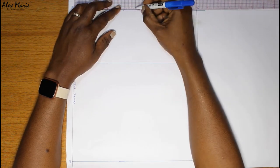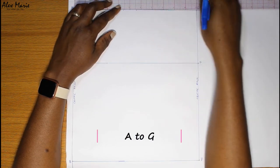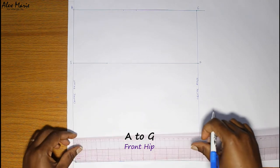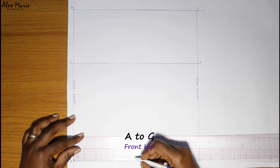From point A you're going to go to point G. This is our front hip measurement. I'm doing the same at the bottom to help me draw a straight line.